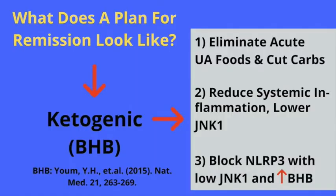On the ketogenic diet, we end up producing the small fat molecule called beta-hydroxybutyrate, which has been shown to directly inhibit the formation of the NLRP3 inflammasome. I recommend a ketogenic eating plan which will be 5% carbohydrate, 20% protein, and 75% fats.